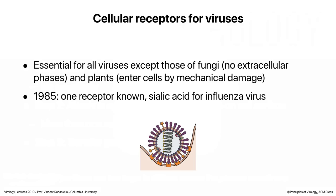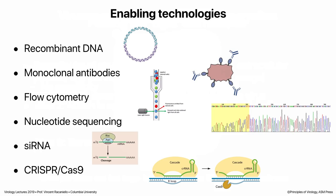Cell receptors for viruses are essential for all viruses except fungi and plants. In fungi, they go from cell to cell as the cell divides; in plants, they get in by mechanical damage or vectors. This is a relatively new field — virus receptors. As of 1985, we only knew one virus receptor, for influenza virus, which happened to be a small sugar known as sialic acid that was pretty easy to discover. After that time, lots of other receptors have been identified because many enabling technologies that allow us to identify which cell surface protein is a receptor for a virus were developed.